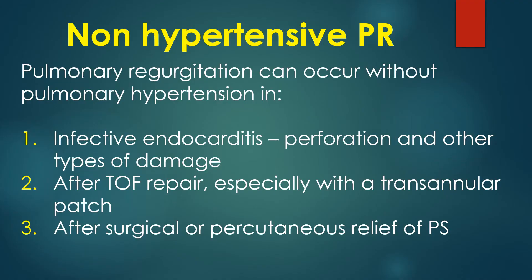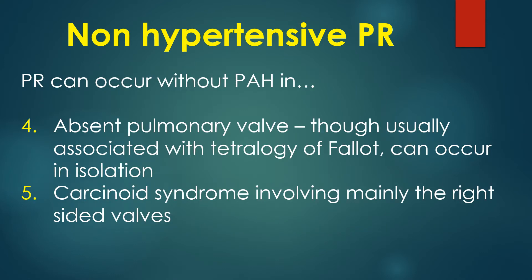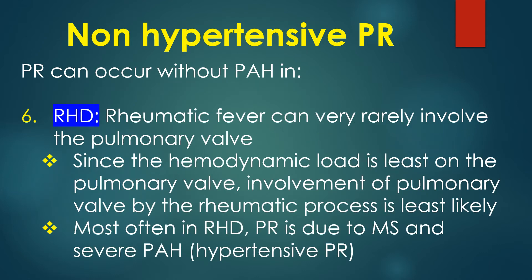Pulmonary regurgitation can occur without pulmonary hypertension in: 1) Infective endocarditis due to perforation and other types of valve damage; 2) After repair of tetralogy of Fallot, especially with a transannular patch; 3) After surgical or percutaneous relief of pulmonary stenosis; 4) Absent pulmonary valve, though usually associated with tetralogy of Fallot, can occur in isolation; 5) Carcinoid syndrome involving mainly the right-sided valves; 6) Rheumatic heart disease — rheumatic fever can very rarely involve the pulmonary valve.